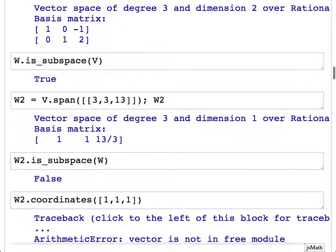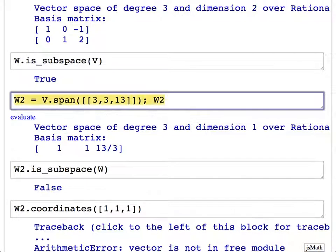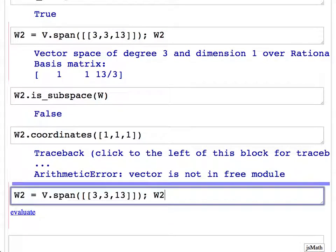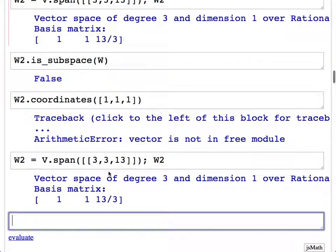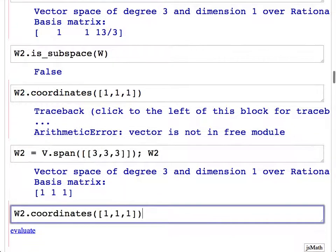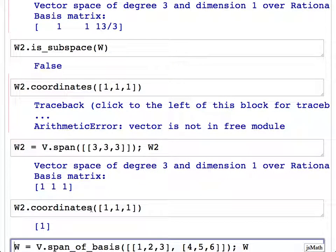And it does. It says arithmetic error: vector is not in free module. On the other hand, let's say I change this to [3,3,3]. Oops, I forgot to change it. [3,3,3]. Now, what do you want that to output? Okay, yeah, one-third. Notice what it does.